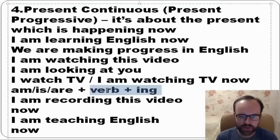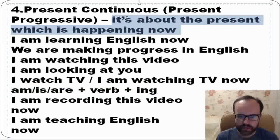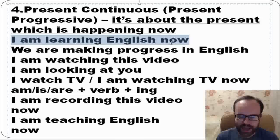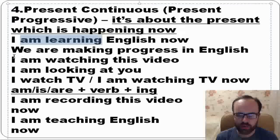We form present continuous this way: am/is/are plus verb plus -ing. For example: I am learning English now — you see 'am' plus the verb 'learn' plus -ing. We are making progress in English — it means we are doing it now, it's happening now.